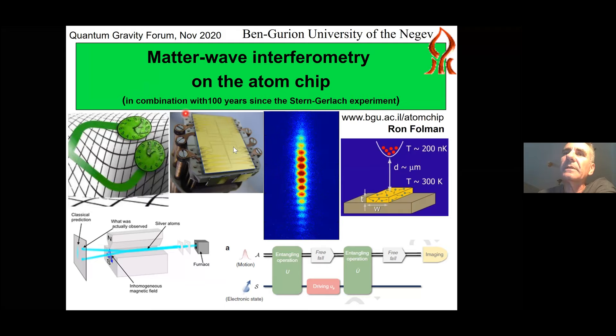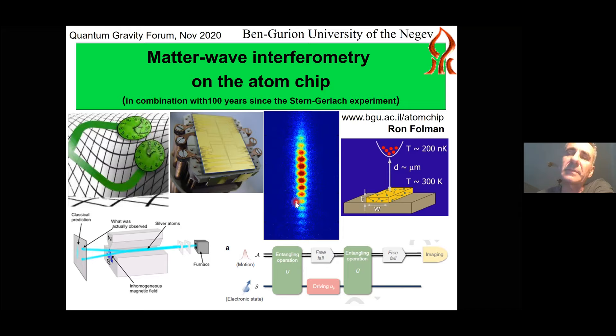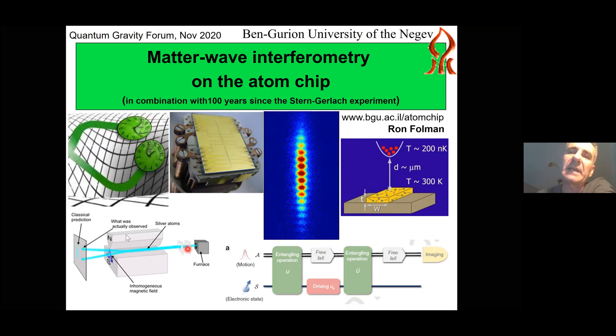What you see here are some pictures — you'll see them again and I'll explain them. In principle, you see a picture of an atom chip. This is how an interference pattern of atoms looks — it resembles the interference pattern of a double slit experiment. We're very close to the surface, so we have to take care of decoherence effects, and this is the Stern-Gerlach apparatus, which is the base for today's talk. There's quite a bit of entanglement between spin and motion in the Stern-Gerlach apparatus.